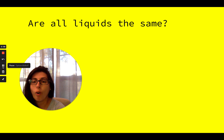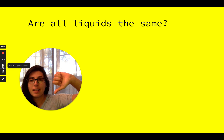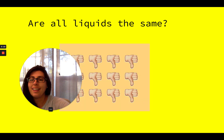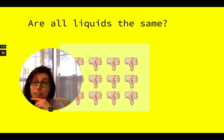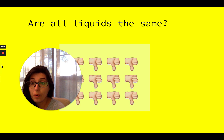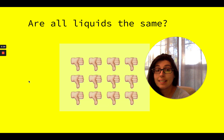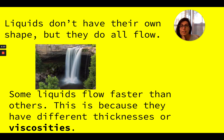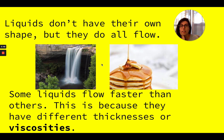I have a question for you. Are all liquids the same? Thumbs up or thumbs down? Ready, set, go. No — thumbs down, right? All liquids are not the same. Liquids can be different colors, and they can also flow in different ways. Liquids don't have their own shape, but they do all flow. Take this waterfall, for instance — it's flowing over rocks very, very quickly. Then take a look at this syrup — the syrup is drizzling onto the pancakes. Do you think it's drizzling as quickly as the waterfall is flowing? Certainly not, right? Some liquids flow faster than others.